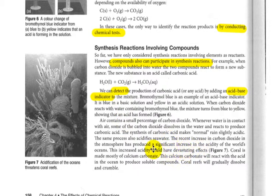The synthesis of carbonic acid makes normal rain slightly acidic. The same process also acidifies seawater. The recent increase in carbon dioxide in the atmosphere has produced a significant increase in the acidity of the world's oceans. This increase could have devastating effects.